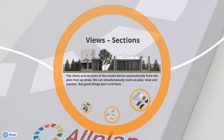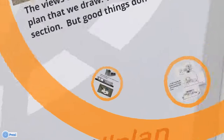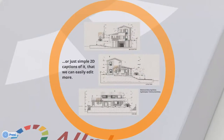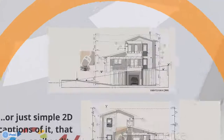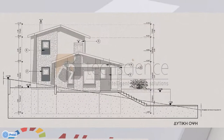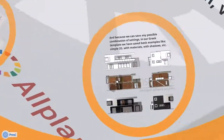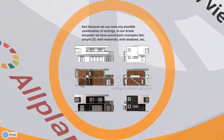Views and sections: the views and sections of the model are derived automatically from the plan that we draw. We can simultaneously work on a plan view and section. Views and sections can be either connected with our 3D model or just simple 2D captions of it that we can easily edit. And because we can save any possible combination of settings, in our Greek template we can save basic examples like symbol 2D, with materials, with shadows, etc.